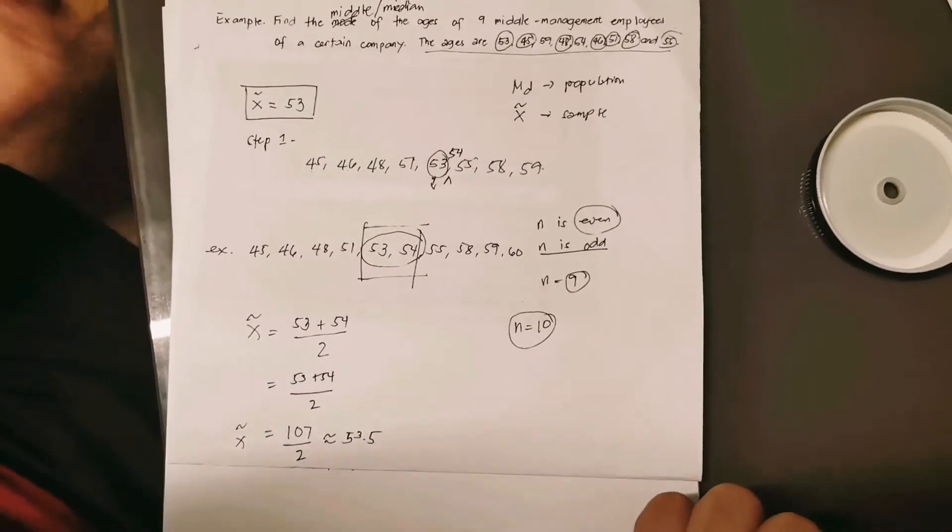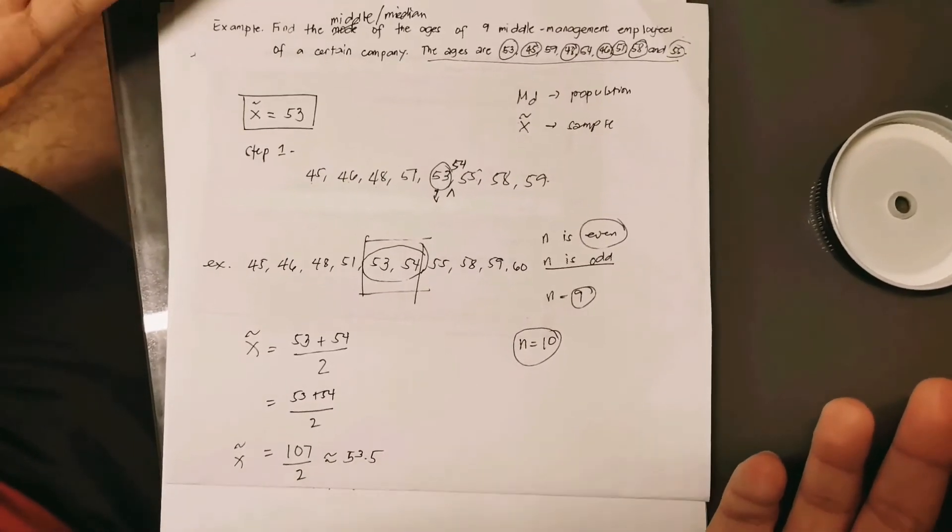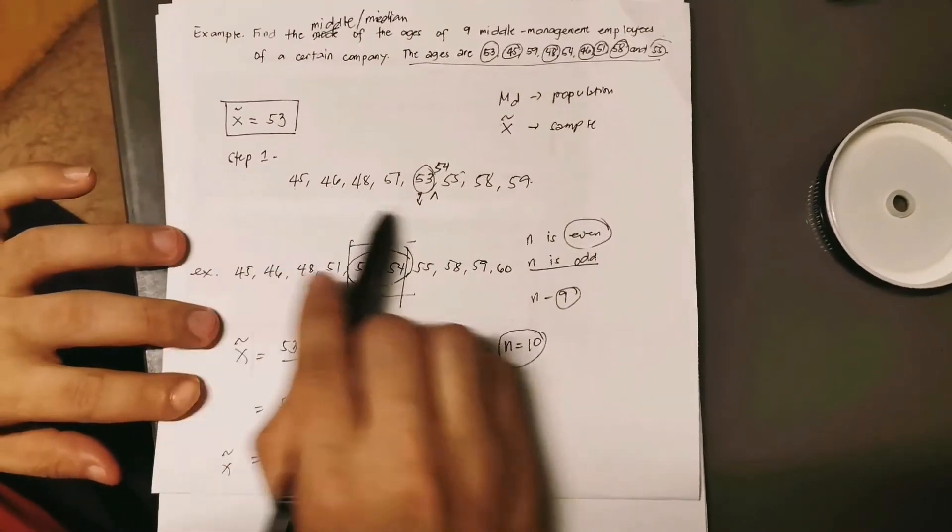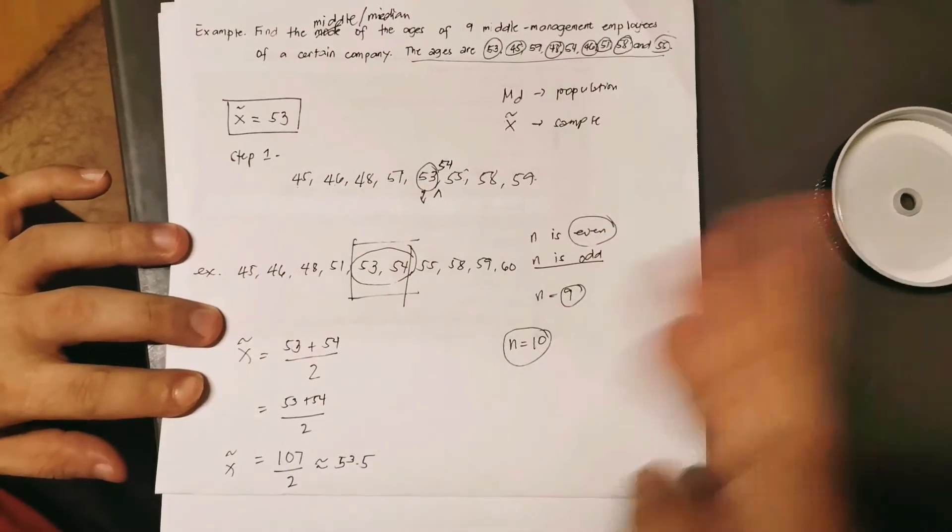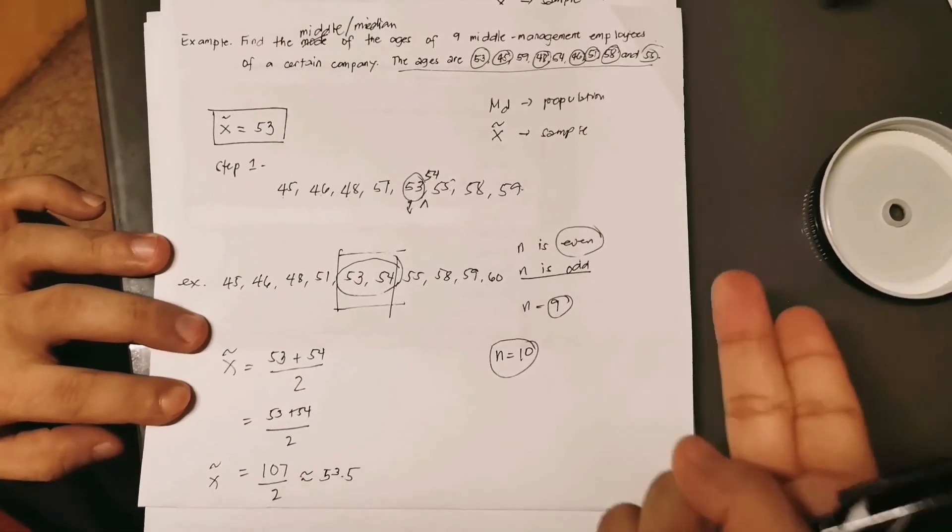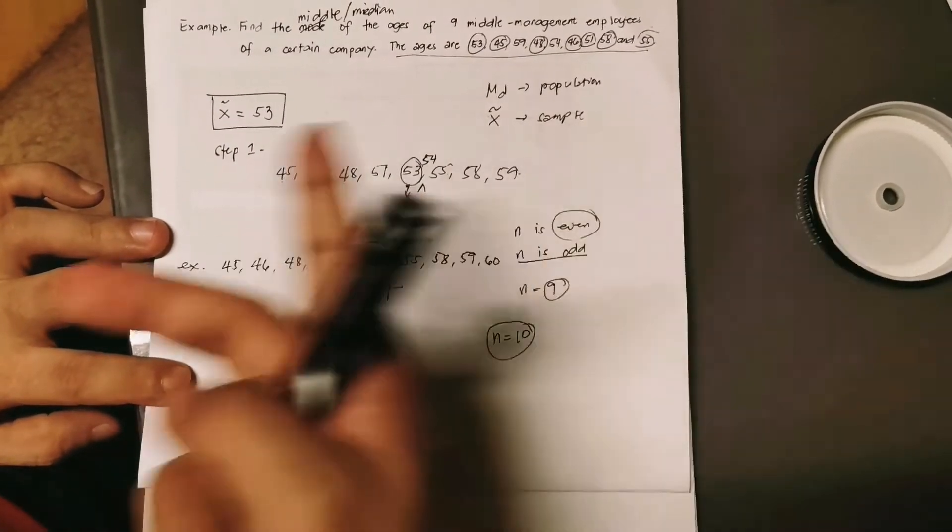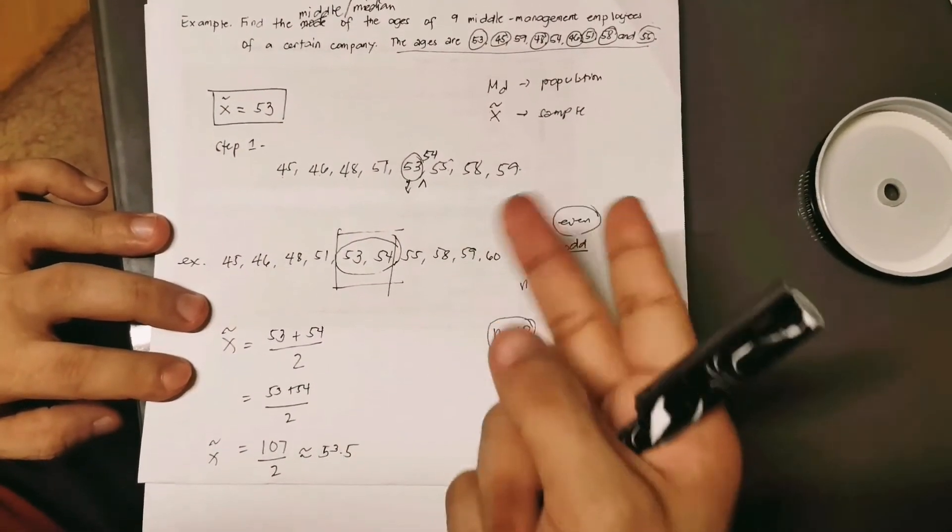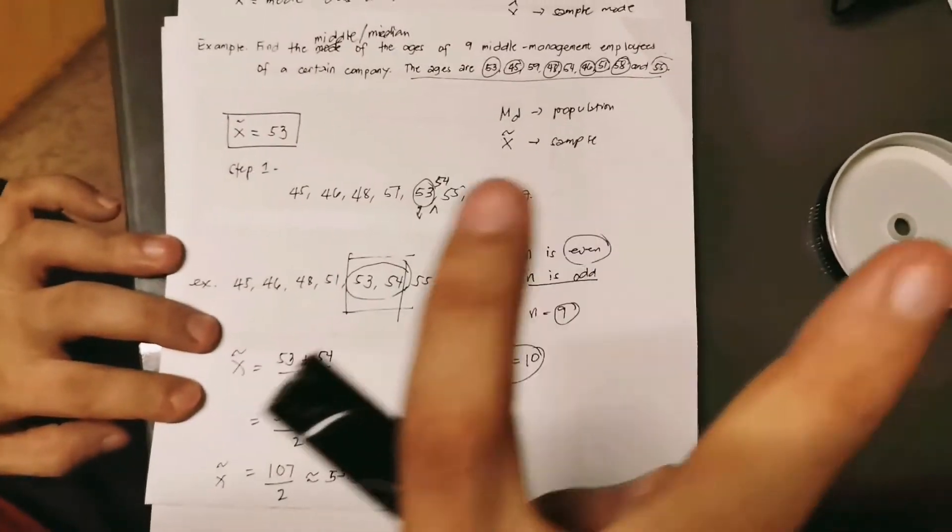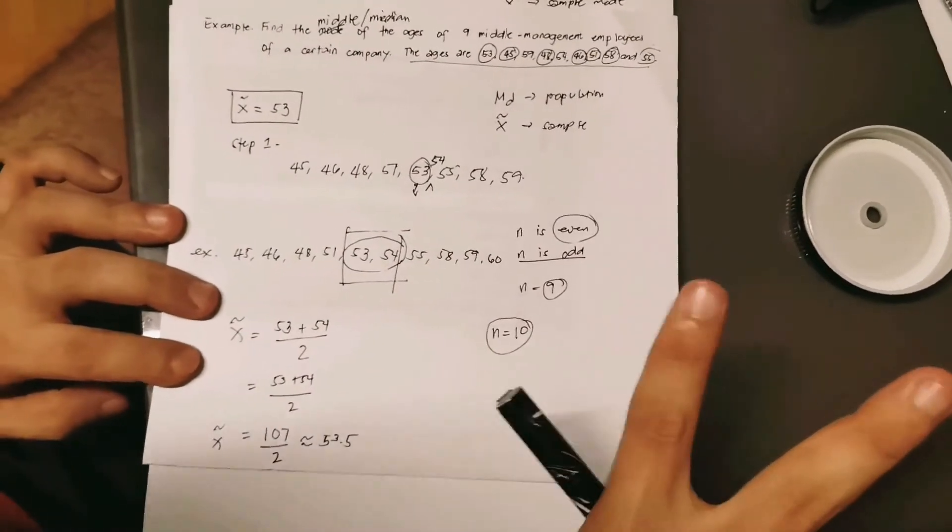That is how we find or get the median of a given dataset. You should always remember, first step is you array the data, whether ascending or descending order. Once done, you have to consider now your sample size, whether it's odd or even. If it's odd, then basically you will get the middle score from the arrayed data. If it is an even number of observations, then you expect that you have two middle scores. You just have to get the average of the two middle scores.